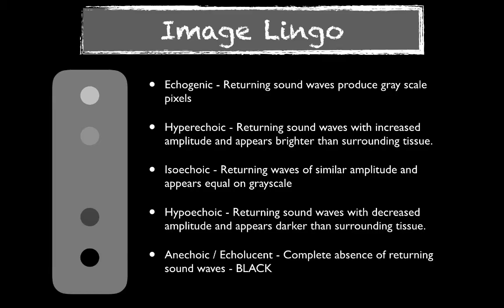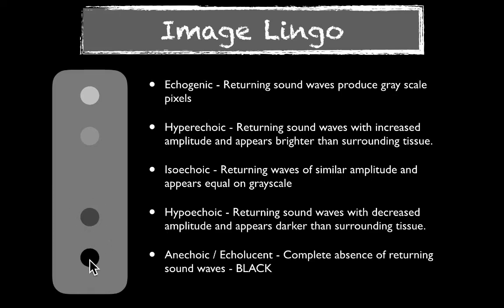To understand this, because we're going to use some of this lingo as we talk about artifacts, we need to understand what the different structures are in comparison. Echogenic just means that there are returning sound waves that create a grayscale pixel on the ultrasound image. You can have structures that are hyperechoic, or brighter, than other structures. Whereas isoechoic means a structure is not obviously distinct from the surrounding structures. You have hypoechoic, which is a darker structure compared to the surrounding tissue. And then anechoic, which is loss of echoes, resulting in a complete area of blackness.